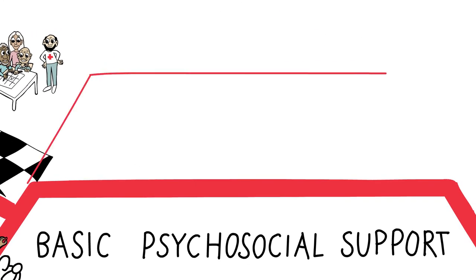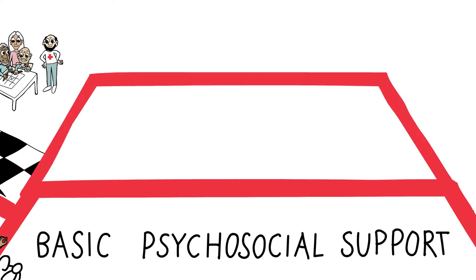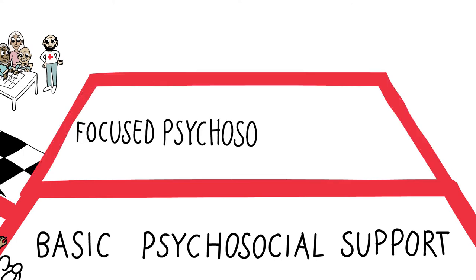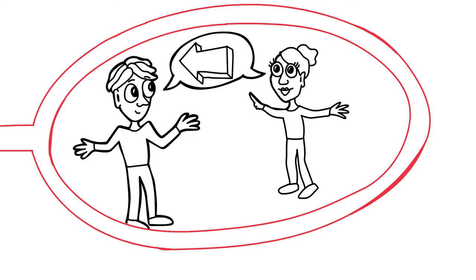The types of services and support Ted receives are based in the second layer of the pyramid, which is about providing focused psychosocial support. At this layer, there is a special focus on at-risk individuals, families, and groups. It includes peer support and group work, and the activities are done by Red Cross Red Crescent staff and volunteers or by trained community members.